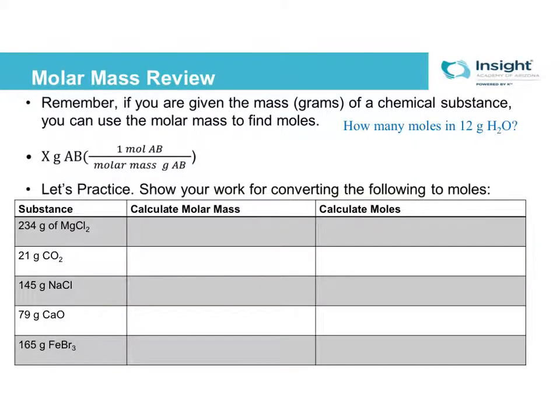So quick review, if you have x grams of whatever substance, this is meant to be a generic way of doing this. If you have 100 grams of substance AB, to convert that to moles, you have to divide by the molar mass of your substance. So divide by molar mass.